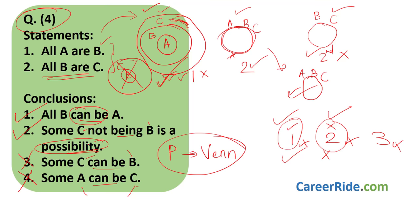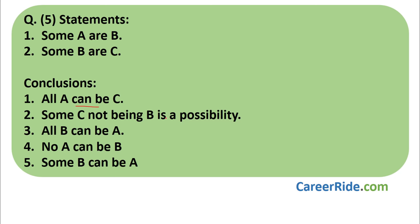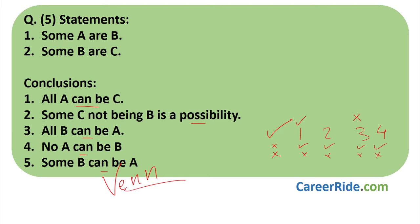Moving to question 5. Again, we can find words like 'can be' in the conclusions — so this is a possibility sum, solved using Venn diagrams. Statements are: some A are B, and some B are C. This is our main diagram. Remember the rule: at least one situation where conclusion is possible, and one where it is not possible — then the conclusion is correct. If all situations are possible, it is false. If all are not possible, also false.